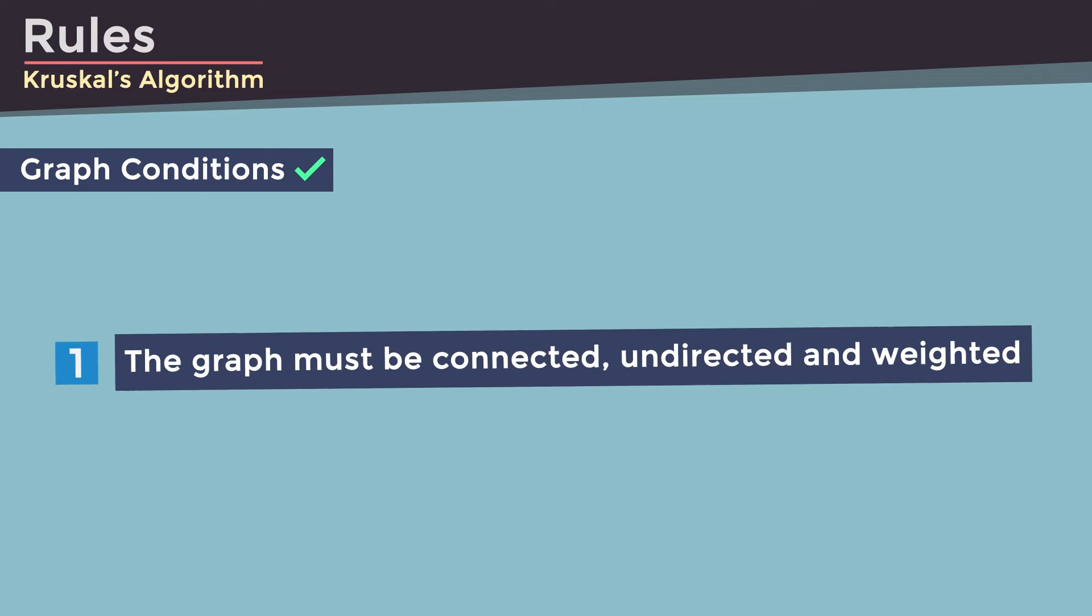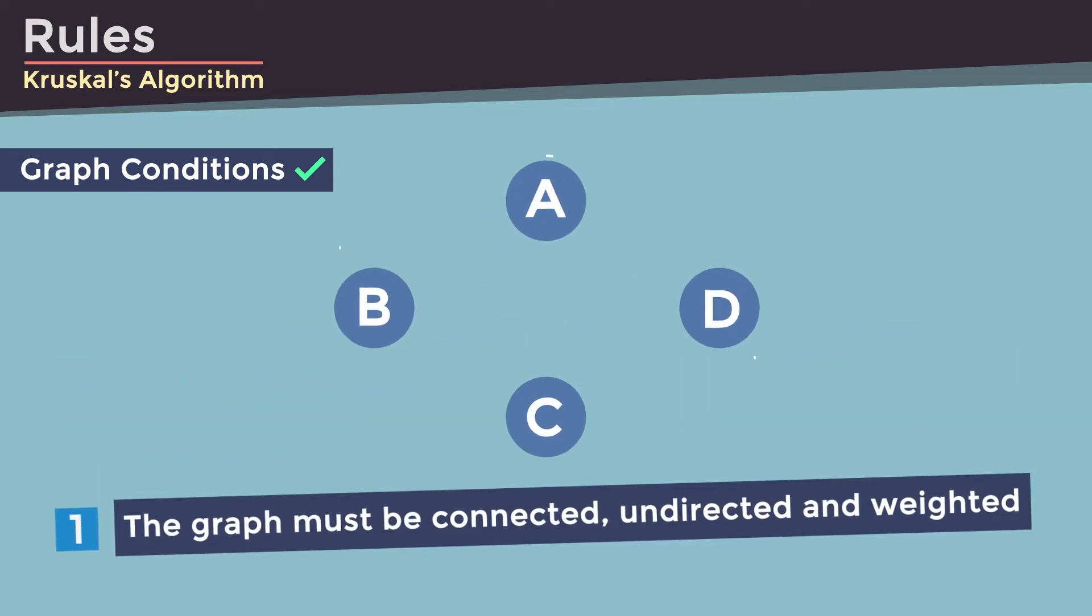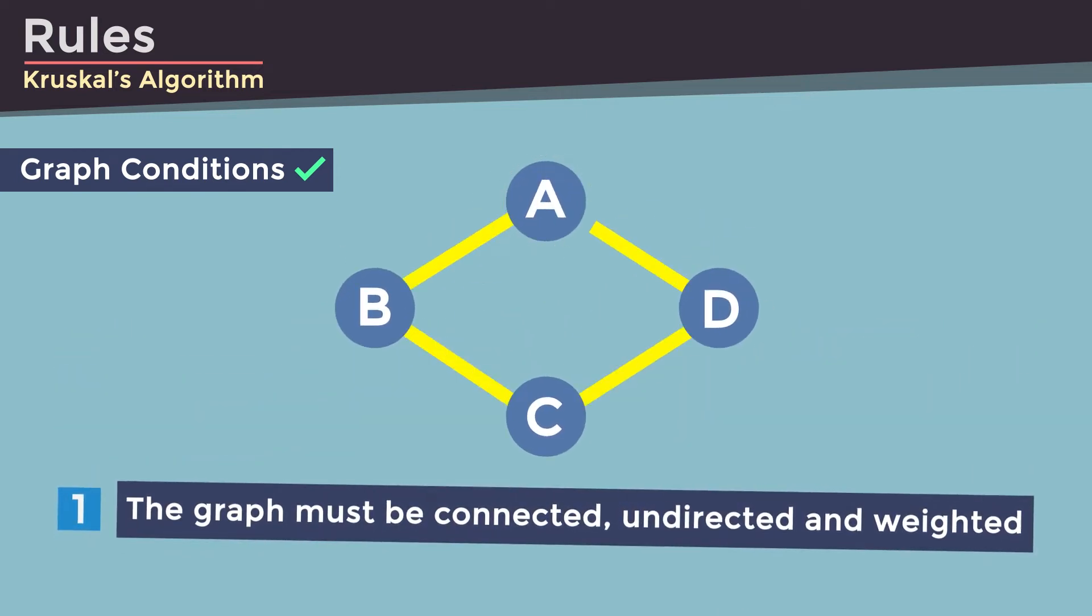First, we have some conditions for the graph. The graph must be connected, undirected, and weighted.